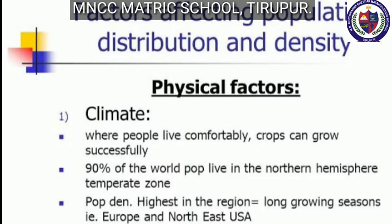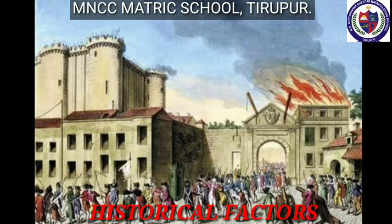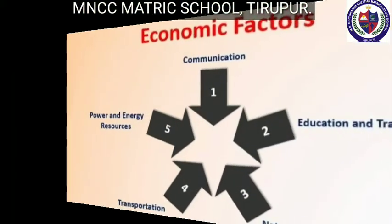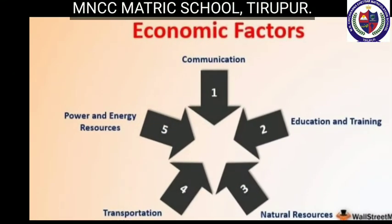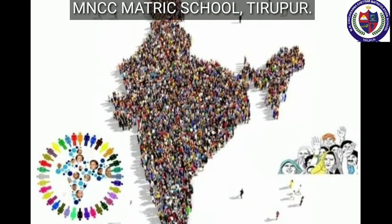Physical factors include temperature, rainfall, soil, health, relief, water, natural vegetation, distribution of minerals, and availability of energy resources. Historical factors include regions with historical importance, river valley civilizations, war, and constant invasions. Economic factors such as educational institutions, employment opportunities, manufacturing industries, luxurious amenities, trade and commerce, and other facilities encourage dense population in an area.